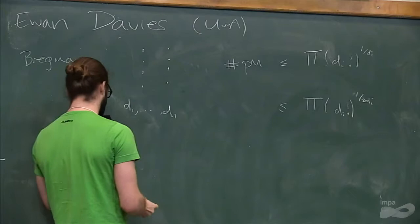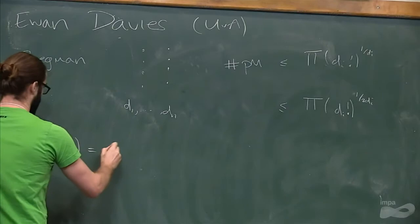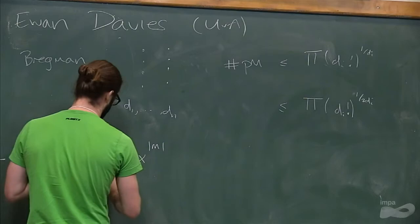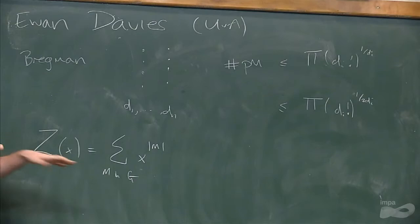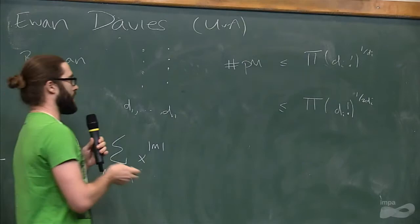So I want to define a polynomial Z(X) to be the sum of X to the power the size of M, where I sum over all matchings in the graph. So the coefficient of X^M is just the number of matchings of M edges in G.